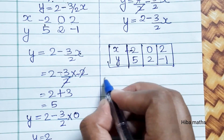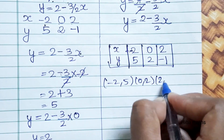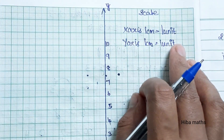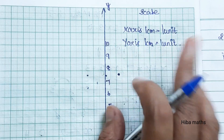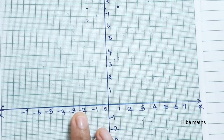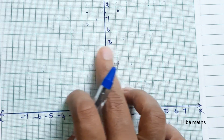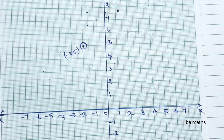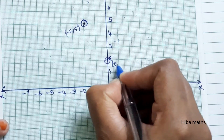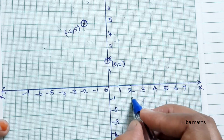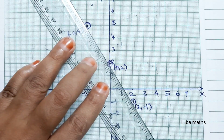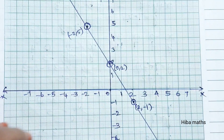The three points are minus 2, 5 and 0, 2 and 2, minus 1. Since both equations give the same points, we can plot them on the same graph. The scale is x-axis 1 cm and y-axis 1 cm. The first point is minus 2 on x-axis and 5 on y-axis. The second point is 0, 2. The third point is 2, minus 1.